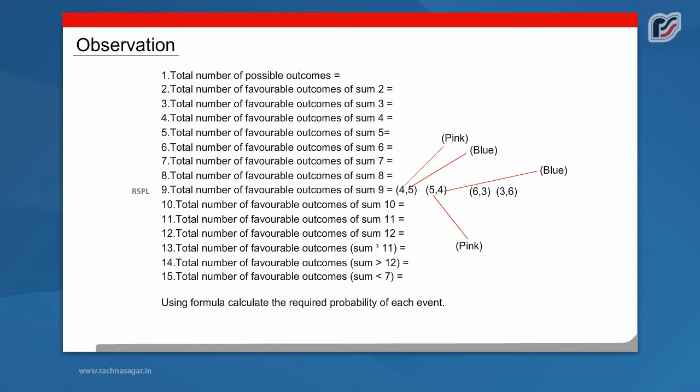Observation: Total number of possible outcomes is equal to 36. Total number of favorable outcome of sum 2 is equal to 1. Total number of favorable outcomes of sum 3 equal to 2. Total number of favorable outcome of sum 4 is equal to 3. Total number of favorable outcome of sum 5 is equal to 4. Total number of favorable outcome of sum 6 is equal to 5. Total number of favorable outcome of sum 7 is equal to 6. Total number of favorable outcome of sum 8 is equal to 5.